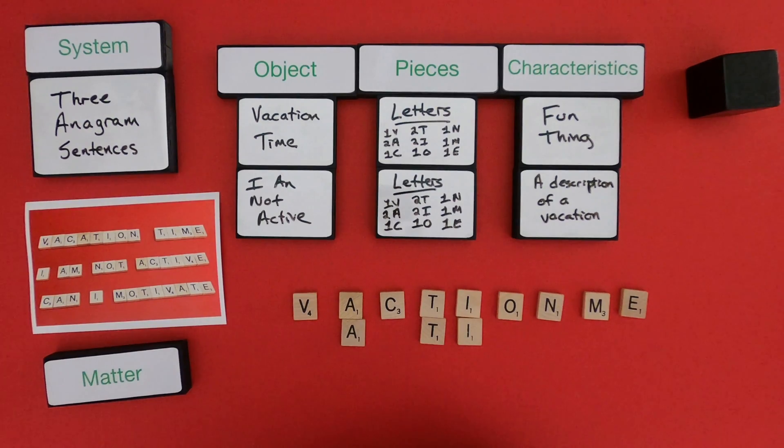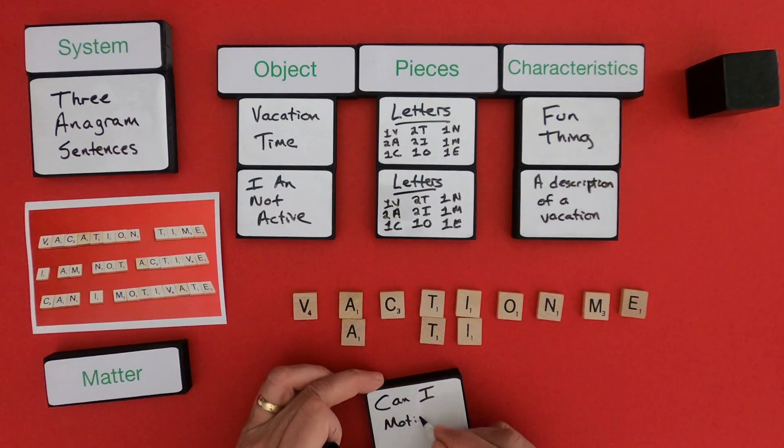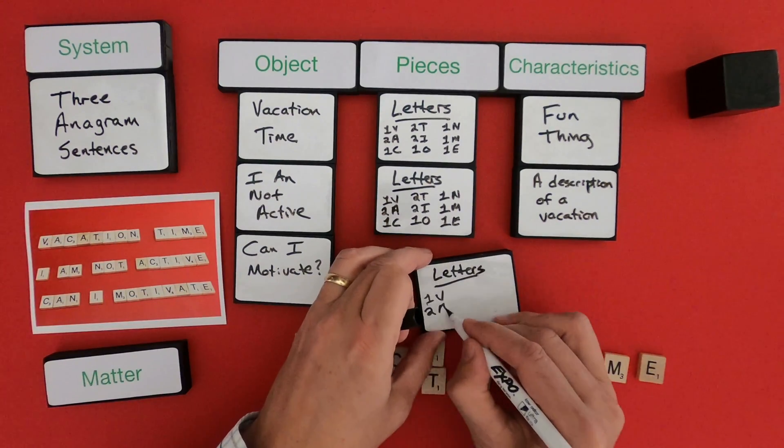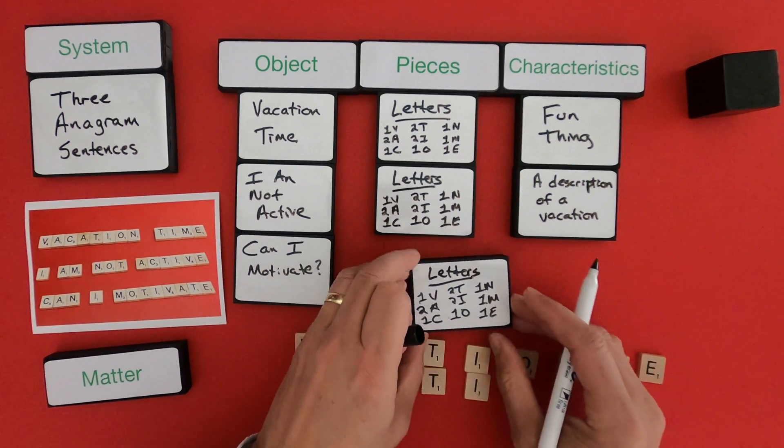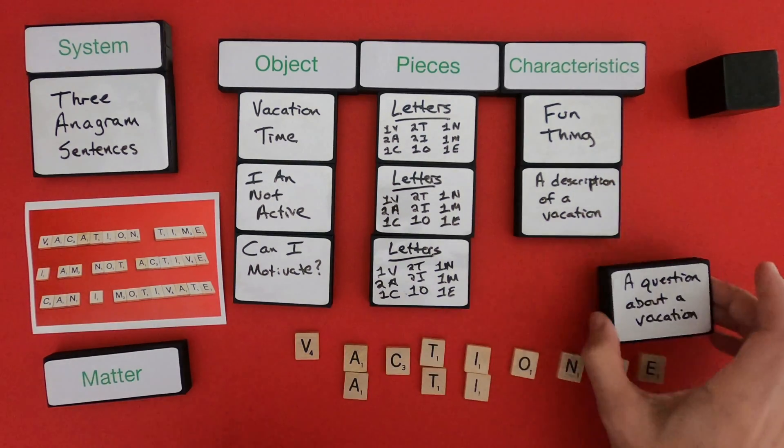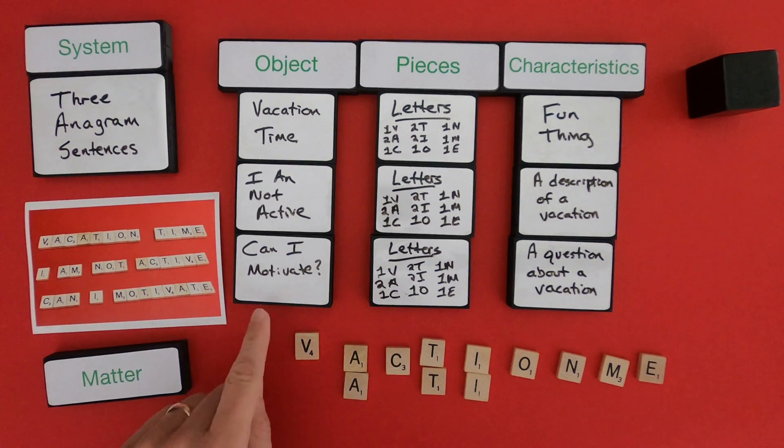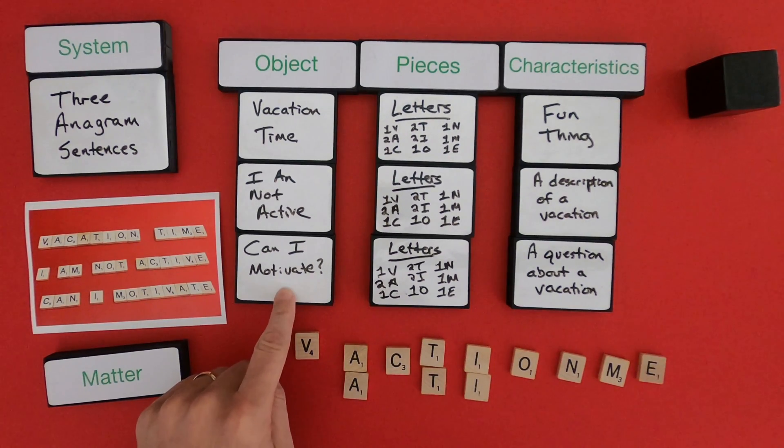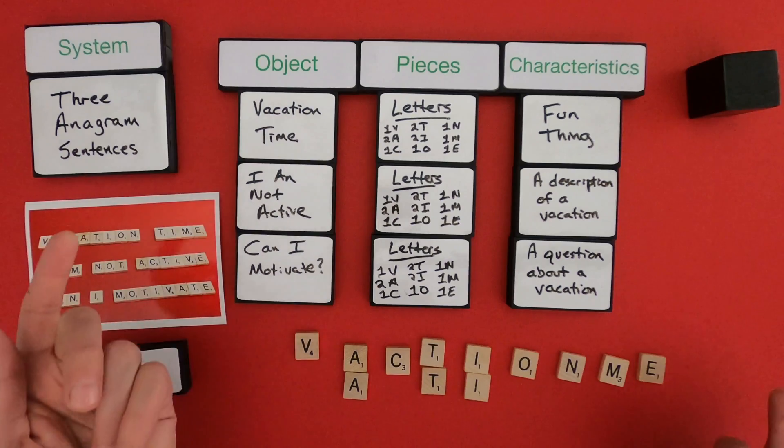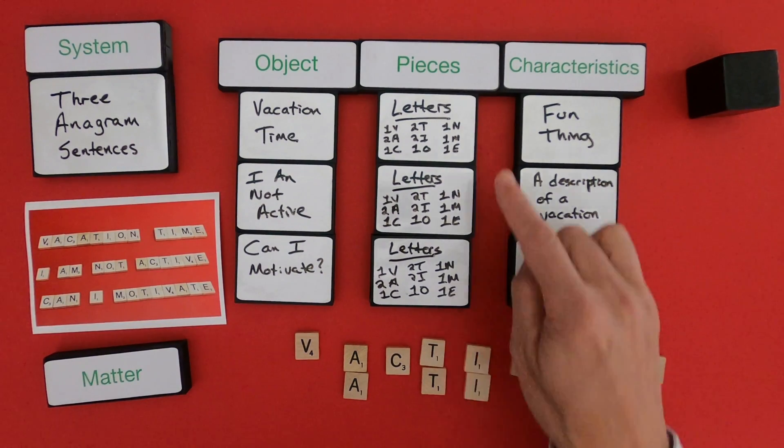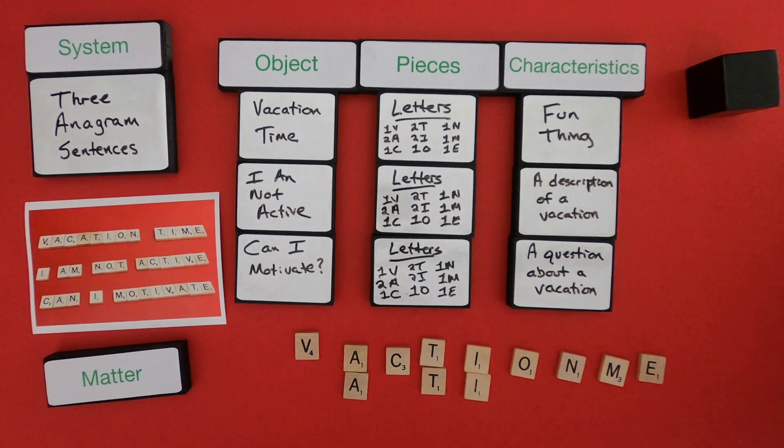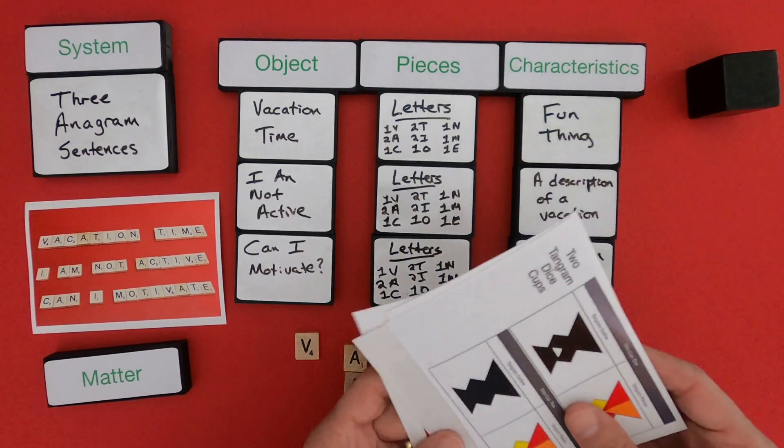You can see that the letters are not going to change, so I'll just write that out. Okay, so for the final one, can I motivate? It's really a question. I'm asking myself a question about the vacation that I'm going to go on. Can I motivate myself to be more active during vacation time? So you can see that the letters are going to be the same. And by changing the order in which those pieces occur, we get a totally new characteristic.